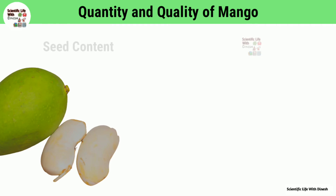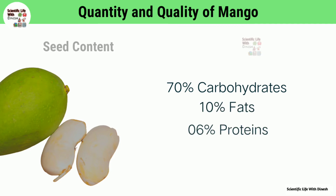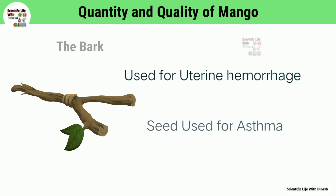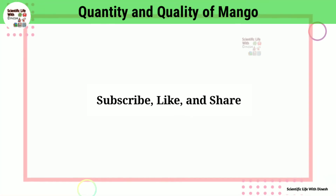The second part is seed content: 70 percent carbohydrates, 10 percent fats and 6 percent protein. The bark of the mango is used for uterine hemorrhage, and the seed is used in asthma.